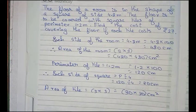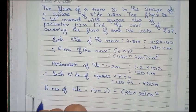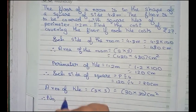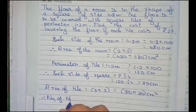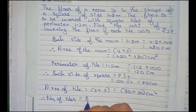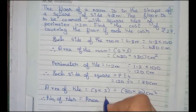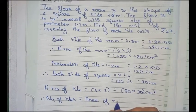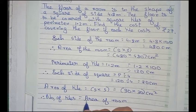Now finding the number of tiles. Number of tiles equals area of room divided by area of tile.